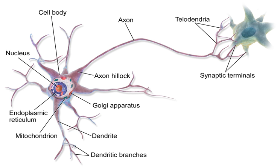The dendrites of a neuron are cellular extensions with many branches. This overall shape and structure is referred to metaphorically as a dendritic tree. This is where the majority of input to the neuron occurs via the dendritic spine. The axon is a finer, cable-like projection that can extend tens, hundreds, or even tens of thousands of times the diameter of the soma in length. The axon carries nerve signals away from the soma and also carries some types of information back to it. Many neurons have only one axon, but this axon may undergo extensive branching, enabling communication with many target cells.